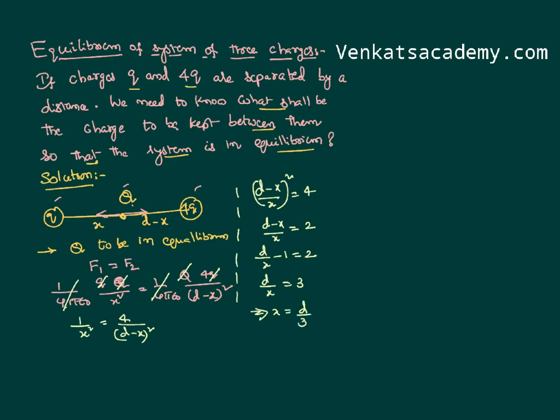So this is the first condition: for the system to be in equilibrium, we have to keep the third charge at a distance of d/3 from q. The next thing we need to know is whether we have to keep a positive charge or a negative charge in between.